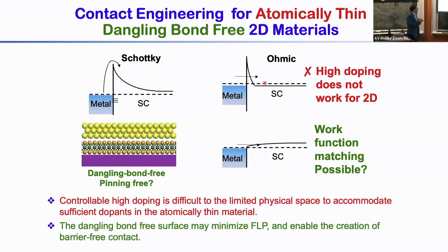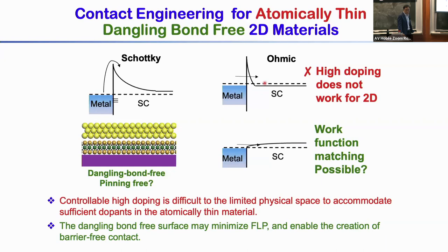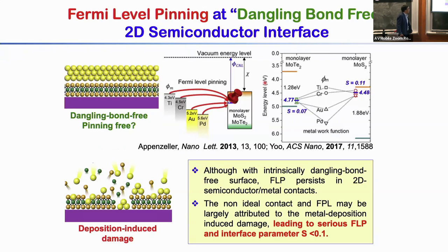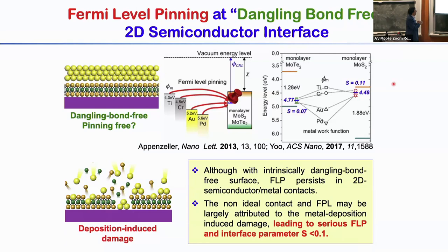So we ask ourselves: can we actually go back to the work function matching approach to get a low barrier contact? This could be potentially interesting for 2D materials because, unlike traditional 3D semiconductors with surface dangling bonds, we actually have an intrinsically saturated surface. This opportunity was recognized by the community about 10 years ago — people started to try using different work function metals to make contact to MoS2. But unfortunately, what they actually found was that the slope of the interface parameter — barrier height versus work function — was almost ramped, basically as bad as cadmium arsenide, even much worse than silicon. This Fermi level pinning is so common in the semiconductor community, it's almost universal.